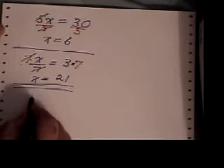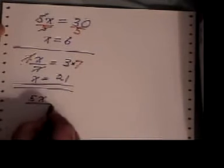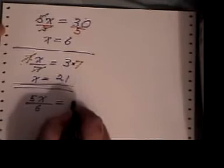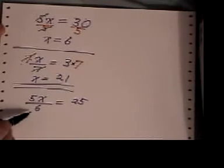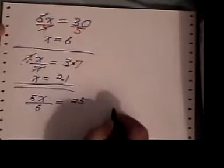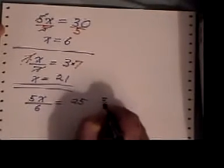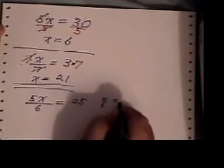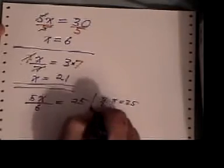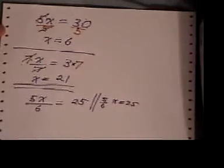The last type of question you have like this is, what happens if you have something like this, where you have a fraction times x? Now, this could also be written as 5/6 x equals 25. So there's another way of writing the same question.